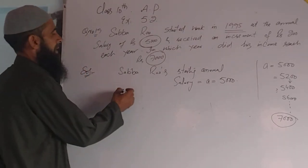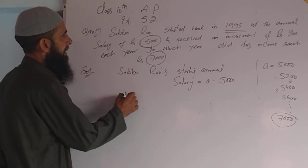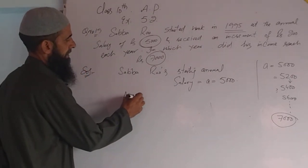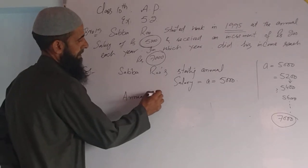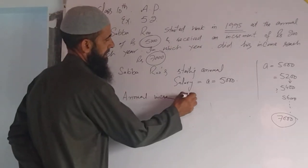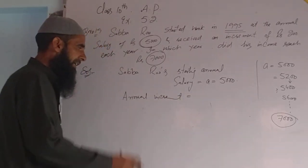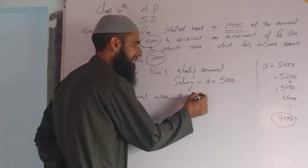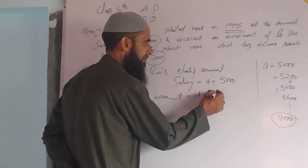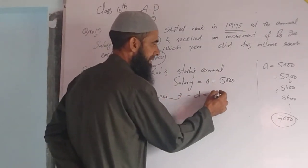Sabha Rao's starting annual salary is equal to A, which is equal to 5000. And the annual increment, that is D, is equal to 200.